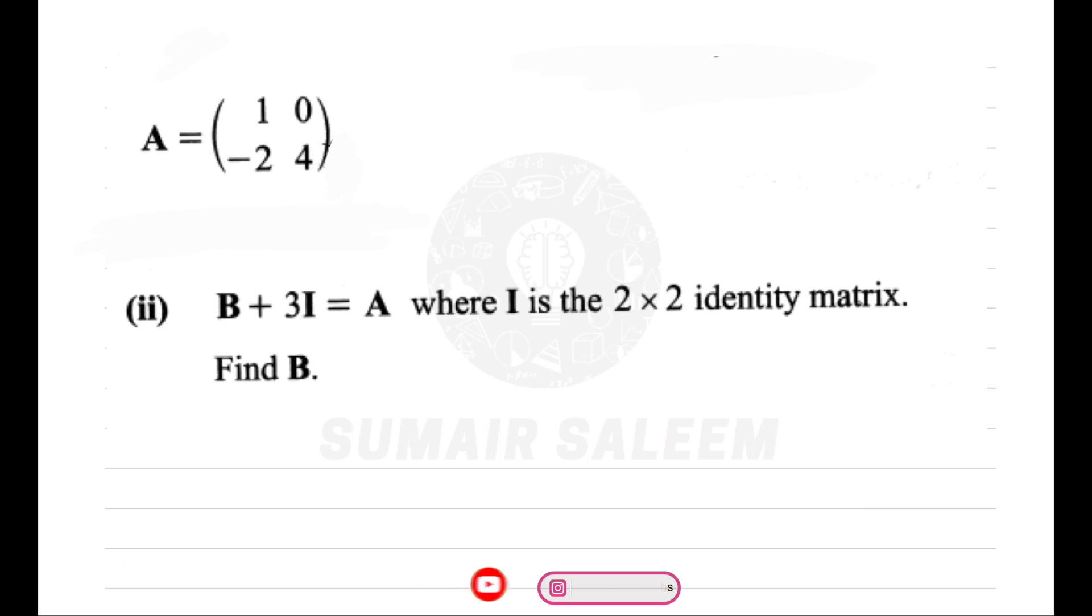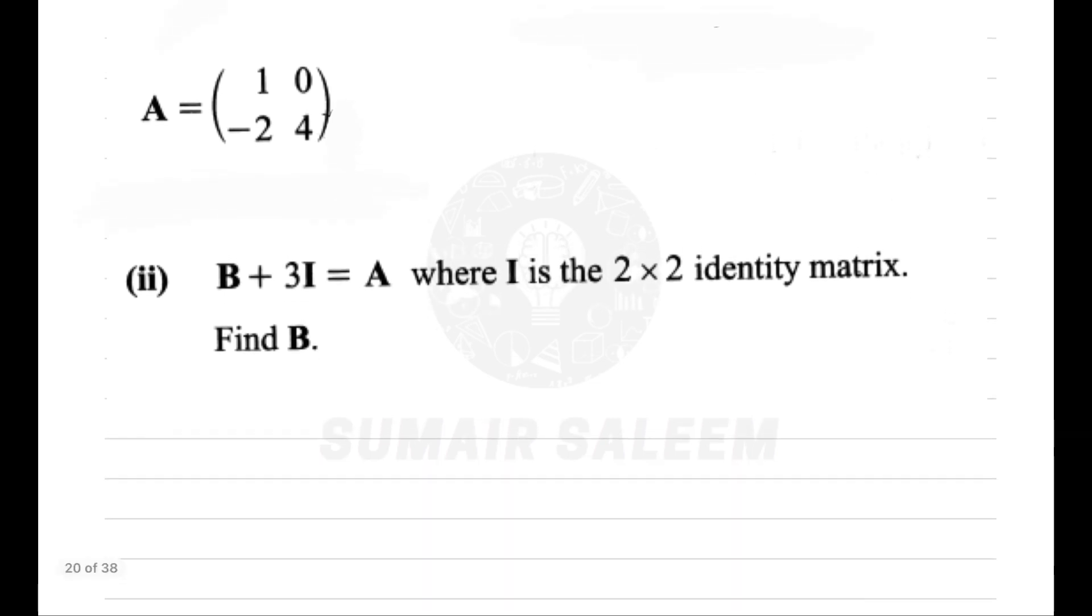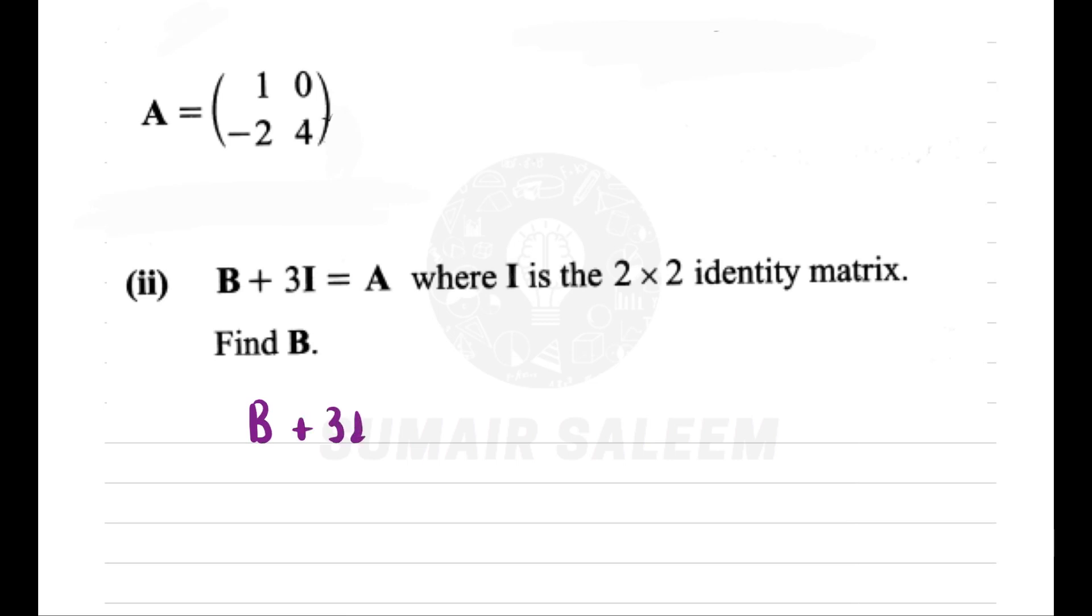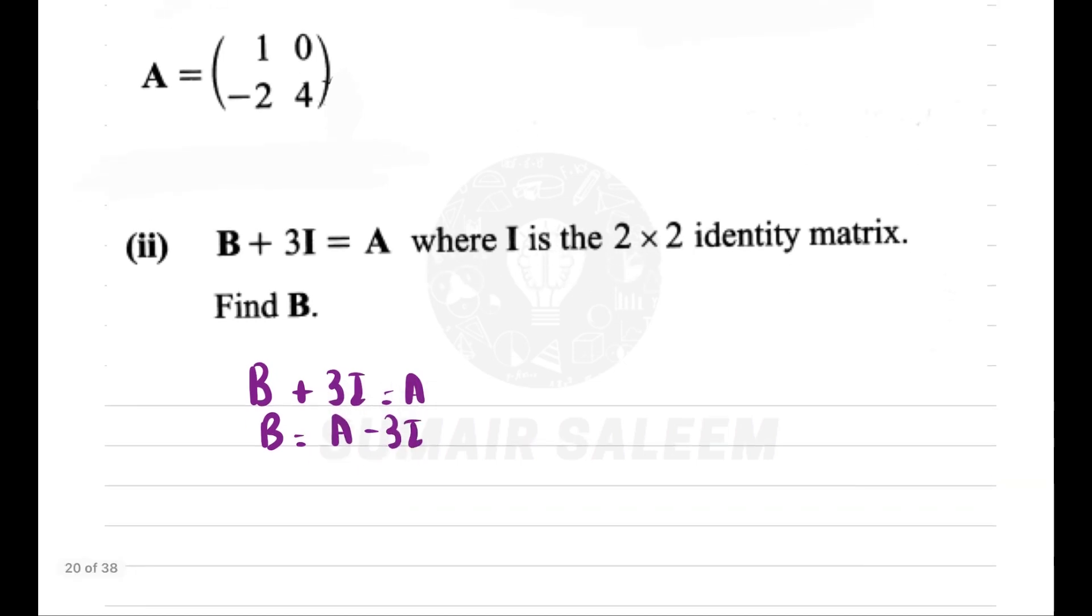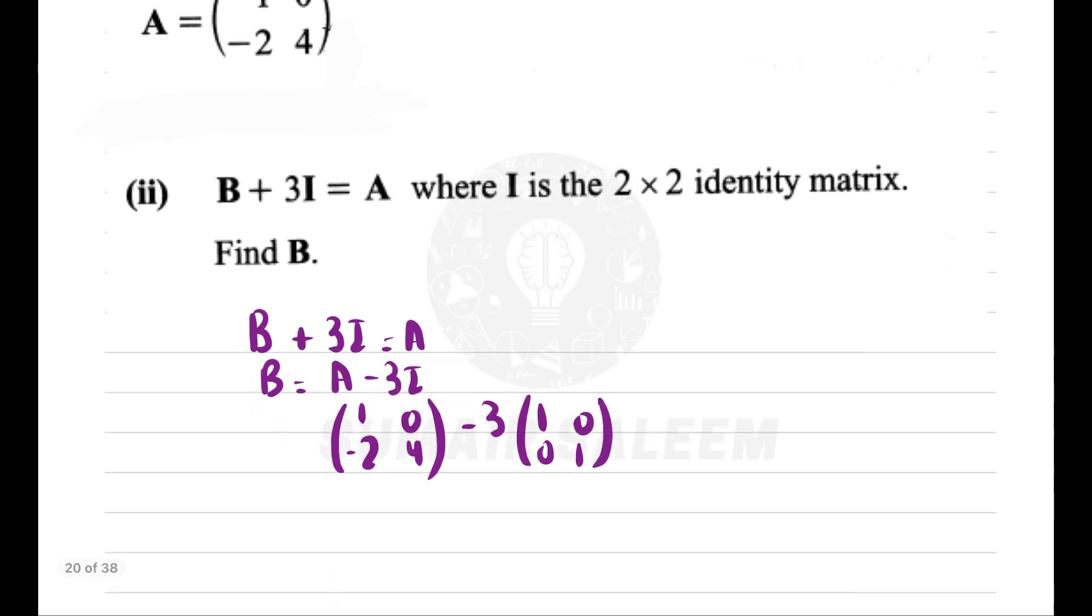Now comes this last question. I'm supposed to find B. B plus 3I equals A, so A minus 3I equals B. Some students will leave this question because I matrix is not given. But you should know that I is the identity matrix: [[1,0],[0,1]]. So my answer will be [[1,-2],[0,4]] minus 3 times [[1,0],[0,1]], which is [[3,0],[0,3]]. Let's subtract: 1 minus 3 is minus 2, 0, minus 2, and 1.